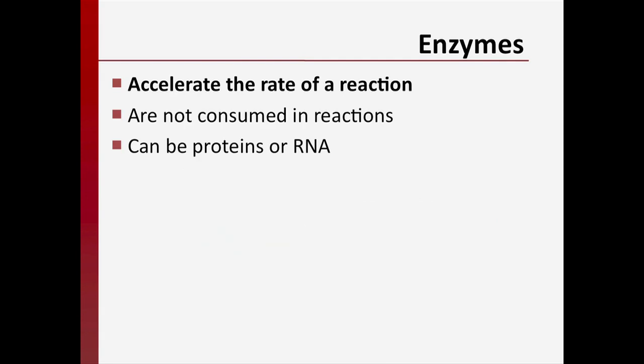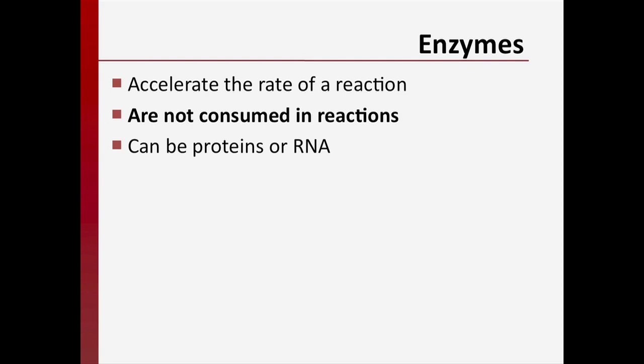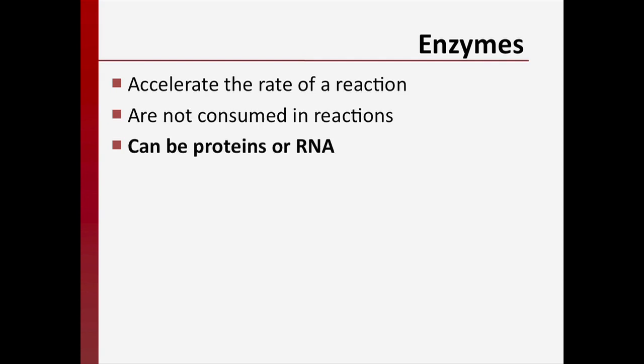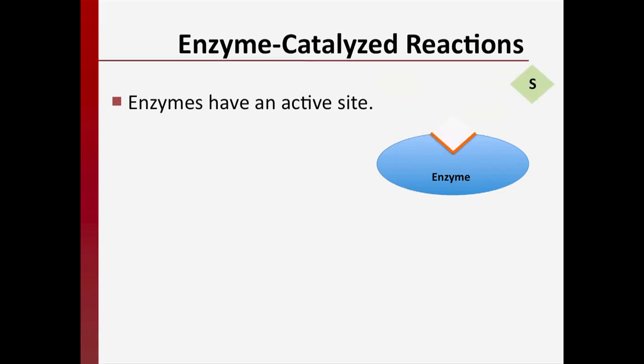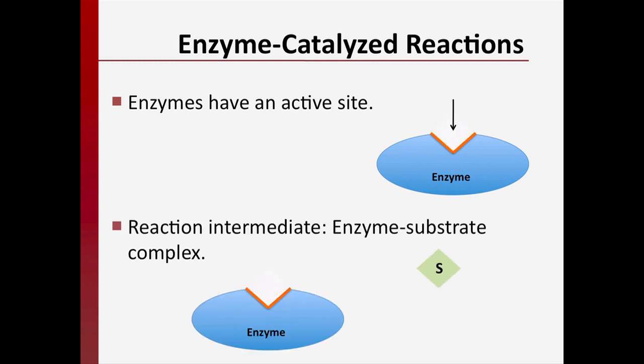Enzymes facilitate reactions, but like other catalysts, are not consumed in that reaction. Enzymes are typically proteins, but RNA has also been shown to catalyze reactions. Enzymes have a region called an active site, and substrates bind to this region. The shape and chemistry of that active site determine the selectivity of the enzyme for particular substrates. When a substrate binds to an enzyme, an enzyme-substrate complex is formed. This enzyme-substrate complex is a reaction intermediate, meaning that it is formed and consumed in the reaction, but does not appear in the overall chemical equation.